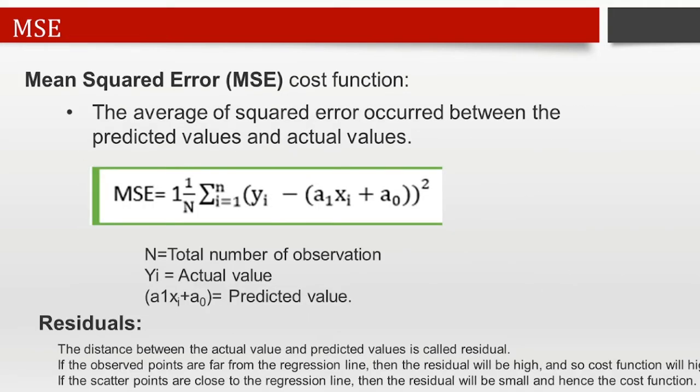Now, mean squared error, or MSE. For linear regression, we use the mean squared error cost function, which is the average of the squared errors between the predicted values and the actual values. MSE can be calculated from the equation where n is the total number of observations, yi is the actual value, and (a1*xi + a0) is the predicted value. Residuals are the distance between the actual values and predicted values.